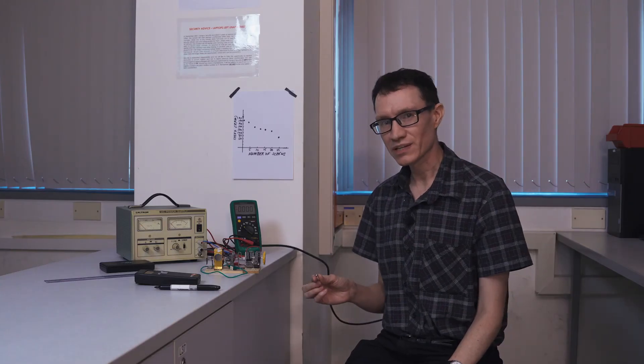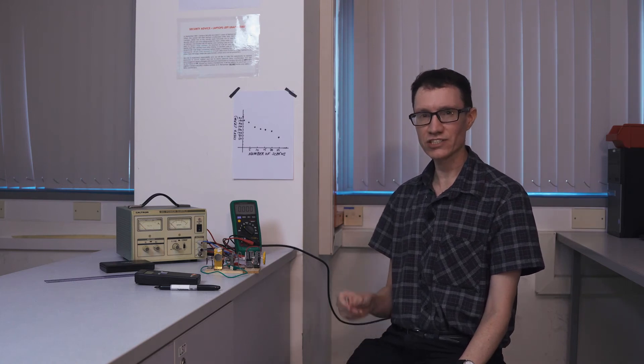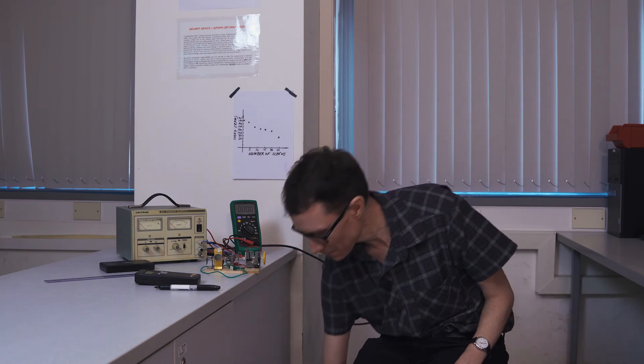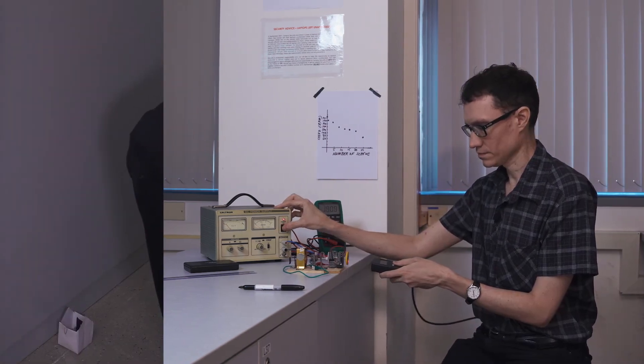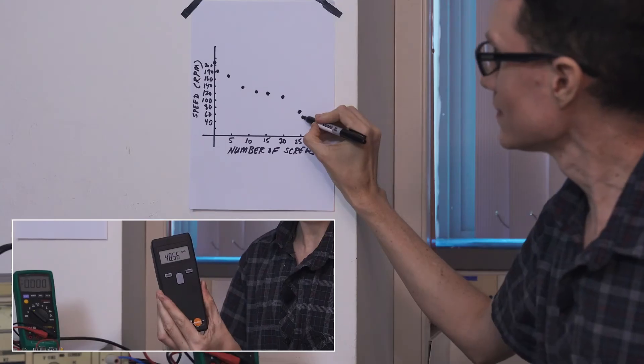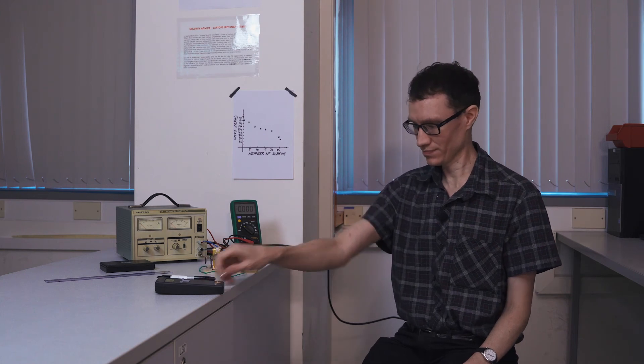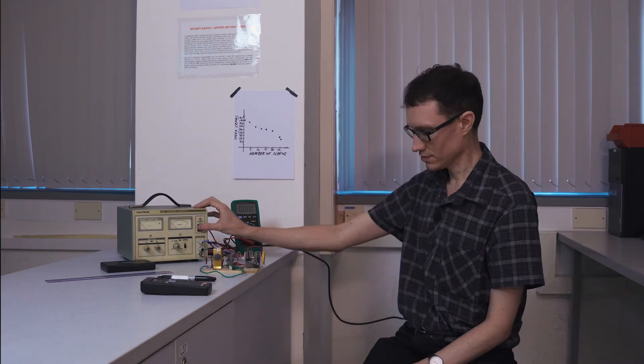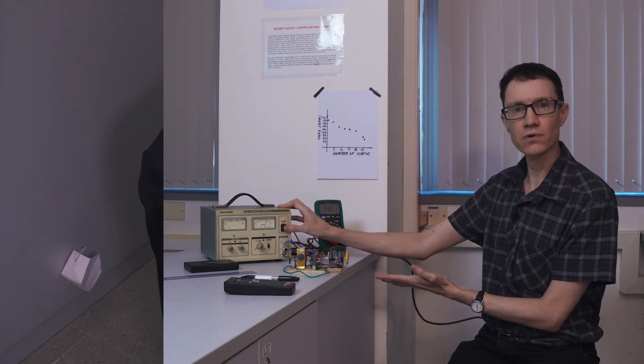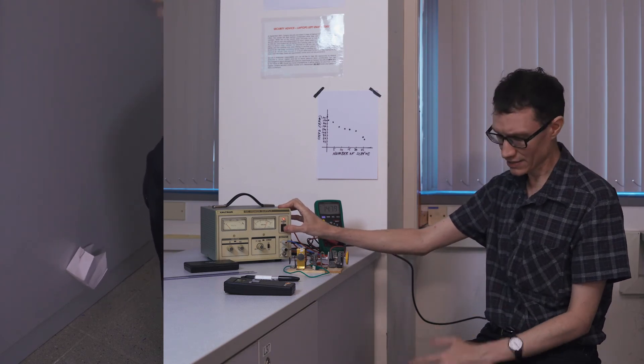The motor wasn't spinning very quickly with 25, so let's add just one more screw to the bucket to see if it can still turn with 26. 48 RPM. Let's add one more screw to make it 27. You can see that the motor is stalling. It can't lift anymore.